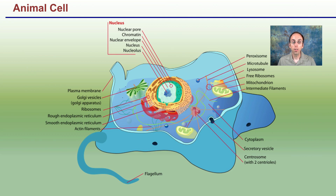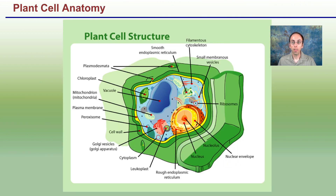In animal cells, we have a diagram here pointing out some of those membrane proteins and what they look like in a general sense — at least in a cartoon image — to give you an appreciation for all those little components. It wouldn't be complete unless we also had a plant cell. You can see a lot of the same components, though some are a bit larger; for example, the vacuole is much larger in a plant cell.